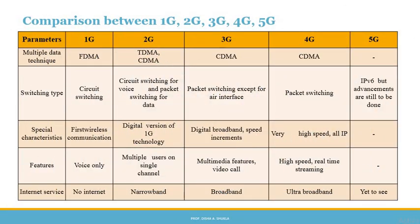The multiple access techniques used: 1G used FDMA, 2G used TDMA and CDMA, 3G used CDMA, and 4G used CDMA. The switching type: 1G used circuit switching, 2G used circuit switching for voice and packet switching for data, 3G used packet switching except for the air interface, 4G used packet switching, and 5G will use IPv6 though enhancements are still to be done. Special characteristics: 1G is wireless communication, 2G is the digital version of 1G, 3G introduced digital broadband and speed increment, 4G brought very high speed and all-IP, and 5G is yet not defined.